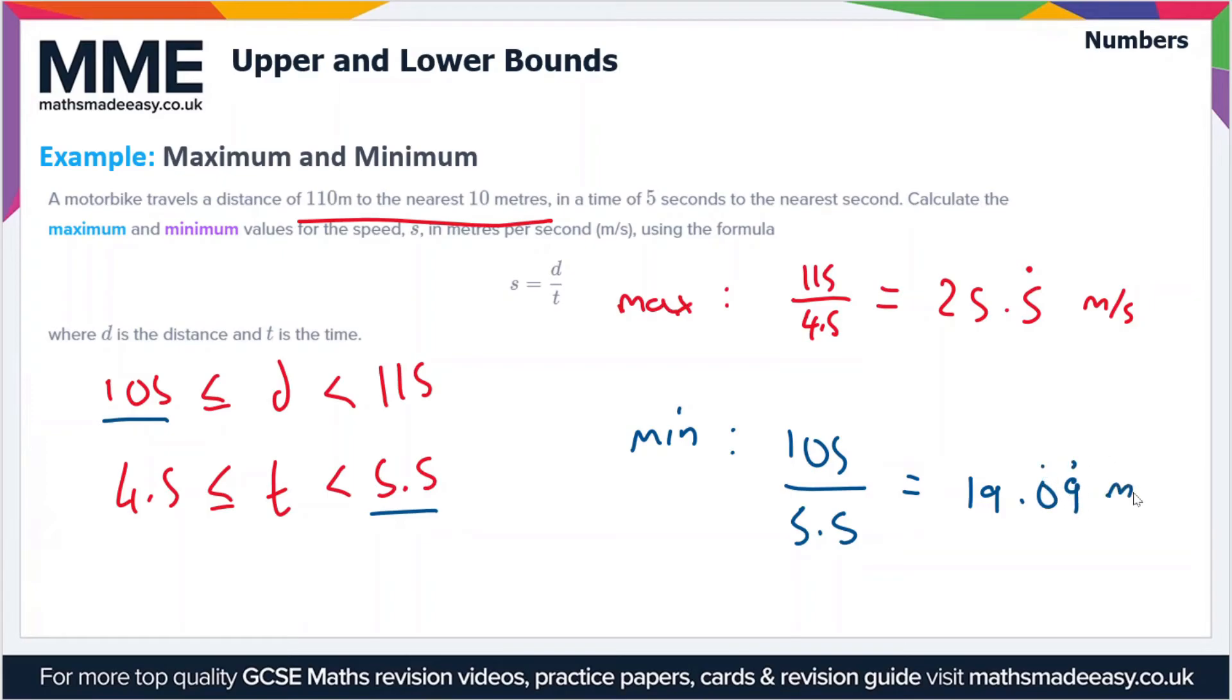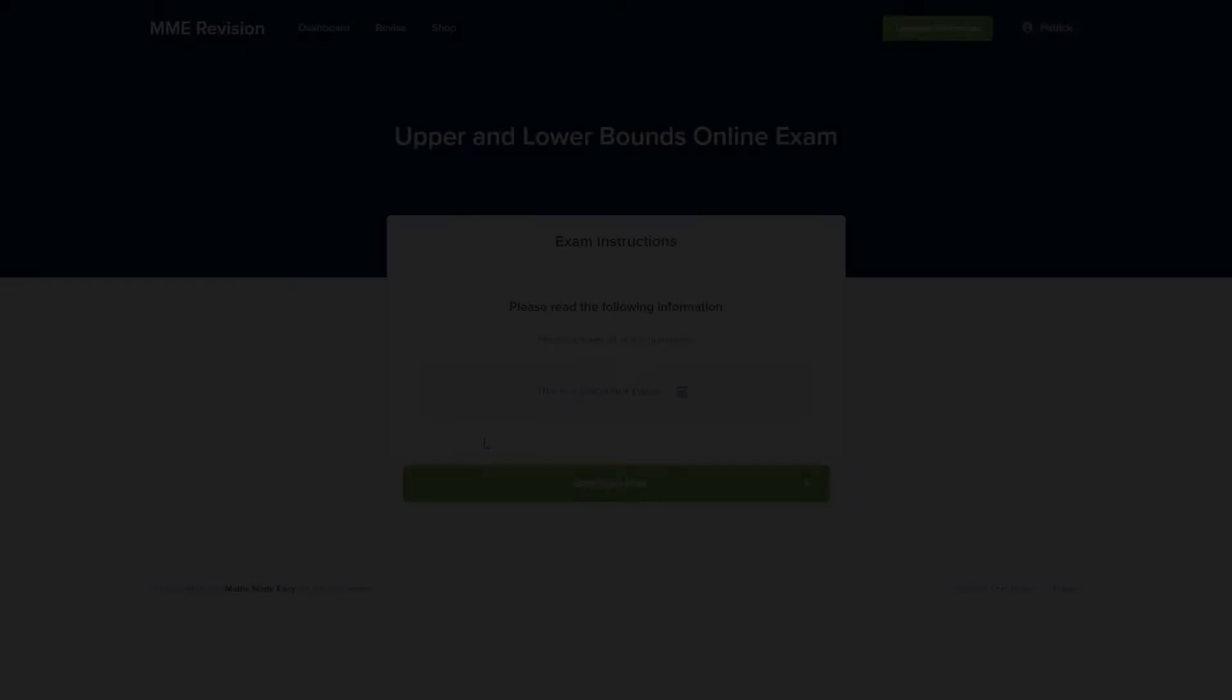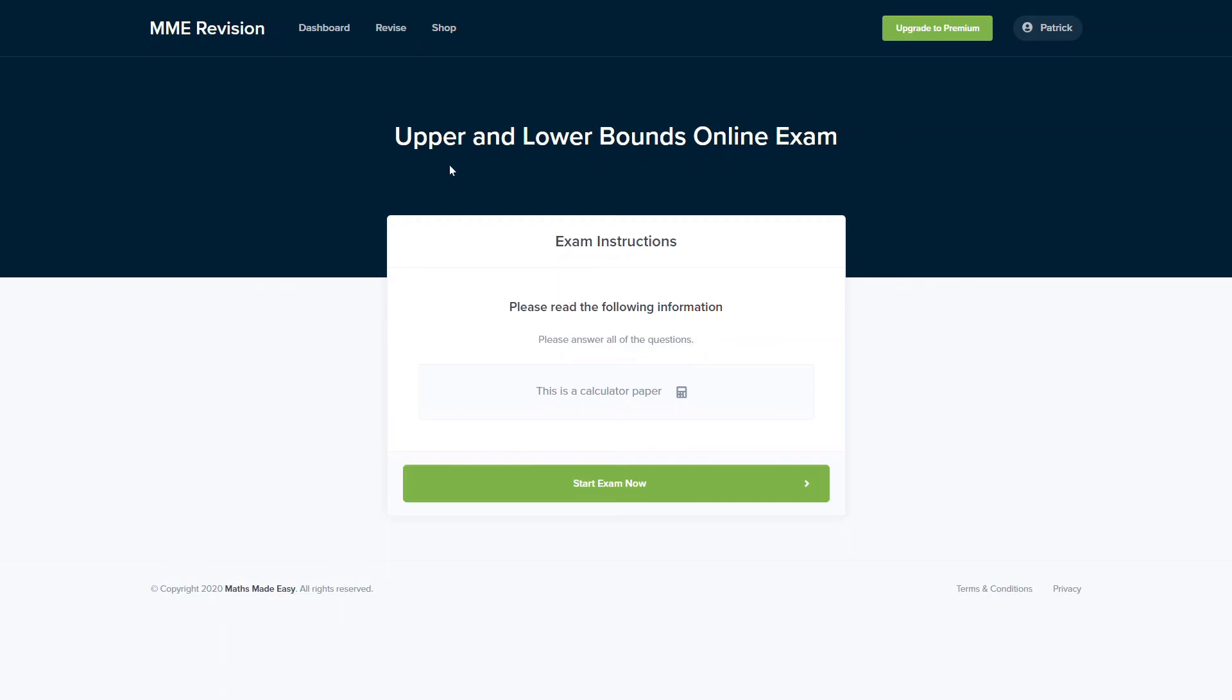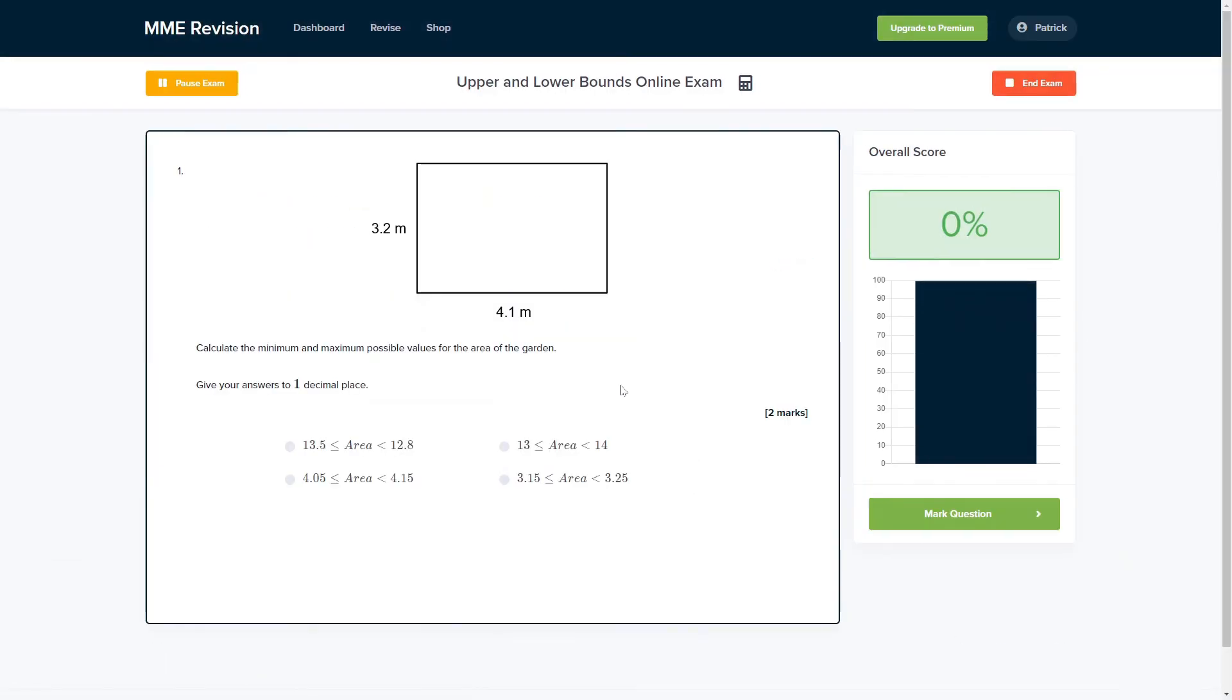So those are the maximum and minimum values for the speed in this case. If you're feeling good about this topic and you want to get some practice in, you can do so with our online exam. This is available through our revision platform, and here you'll find loads of different questions to have a go at and you'll get instant feedback on each and every one of them. So it's a really good way of finding out where your strengths are, where your weaknesses are, and how you can improve for your exams. If this is something you're interested in, then you can click the link below.